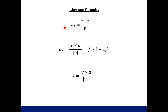Here are some alternate formulas. The tangential component of acceleration can also be found by taking the dot product of velocity and acceleration divided by the magnitude of velocity. The normal component has two alternate formulas: one involves the cross product of velocity and acceleration (and its magnitude divided by the magnitude of velocity), and the other is the square root of the magnitude of acceleration squared minus the tangential component squared. There's also an alternate formula for curvature using the cross product of V and A divided by the magnitude of V cubed.